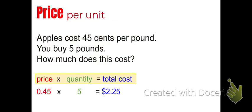If you're given the price per unit and you're told how many units you're buying, you just need to multiply those together to find the total cost.